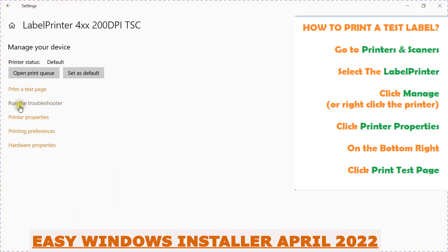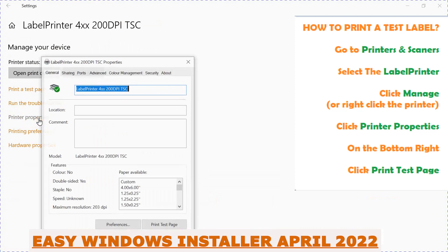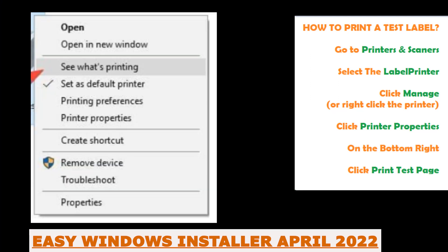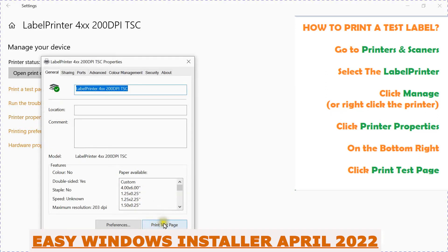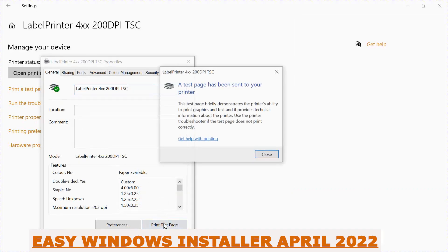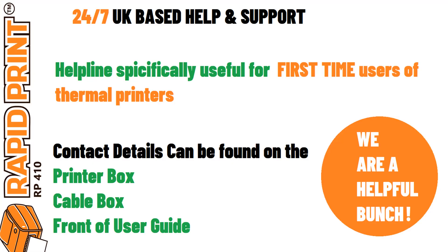Click it, click Manage, then go to Printer Properties. Please note that on some Windows versions you may be able to simply right-click and go to Printer Properties. Within the General tab you can click Print Test Page. If there are any issues, simply contact our UK-based help and support — details are provided on all user guides and on the side of the printer box.